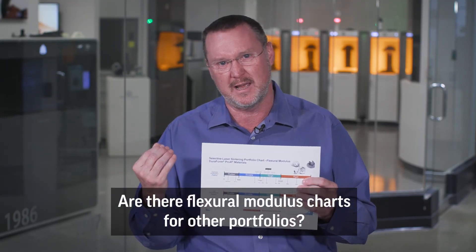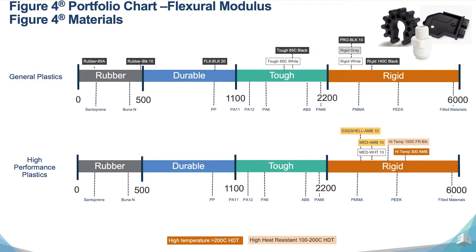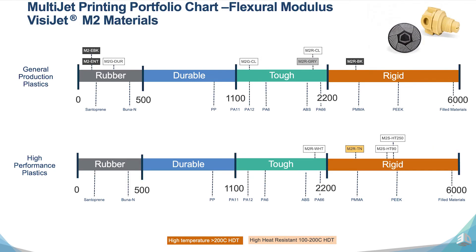Let's go to the mailbox and look at some questions that were sent in. We had a great question from someone looking at the flex modulus chart shown in the vlog on figure four. We do have this for selective laser sintering, stereolithography, and multi-jet printing. You'll see those here, and as we get those organized we can make them downloadable so you can use them as a filter to go through our materials and make good decisions. Thanks a lot — be sure to send your other questions in to Marty on Materials.